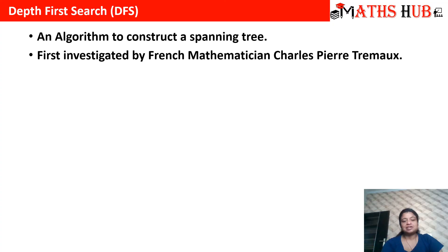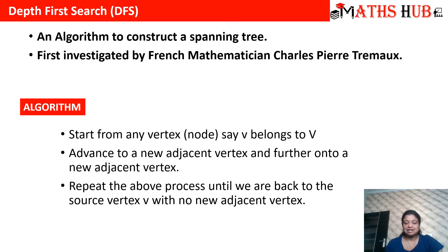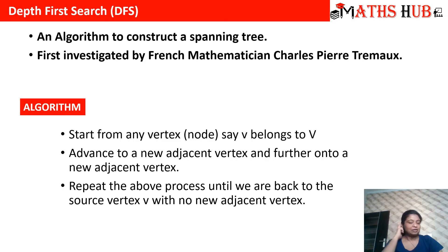This algorithm is another algorithm to construct a spanning tree and it was first investigated by the French mathematician Charles Pierre-Thomox. The algorithm says: start from any vertex V which belongs to the vertex set, then advance to a new adjacent vertex, and further on to a new adjacent vertex, and repeat this process until we are back to the source vertex V with no new adjacent vertex. If any vertex is given to us to start from, we will start from that vertex; otherwise we can start from any vertex in the graph.